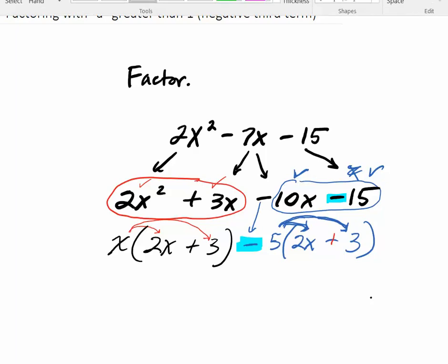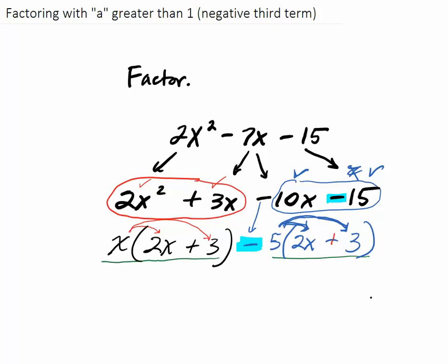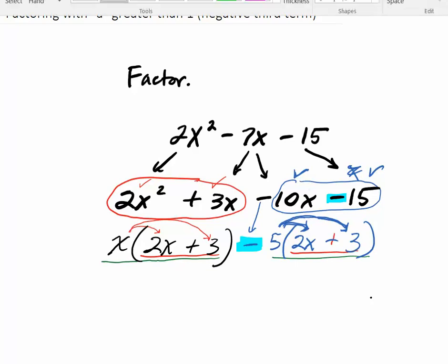Now, interestingly enough, not interestingly enough, this is mandatory. When I look at my two green terms now, I have to see a common factor. This right here has to be the same. So that was my other clue, that this sign here and here had to match. They have to match. That was my other clue. I had to make an adjustment.